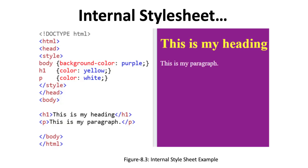Here we have a purple background. We have the heading 'this is my heading' in yellow color, and the paragraph 'this is my paragraph.' We start with doctype HTML, then HTML tag, then head tag, then style tag and its element body. Background-color is purple — we have made background-color colon purple as the value.